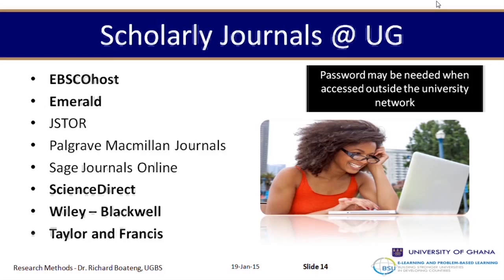Some of the journal databases that exist include EBSCOhost, which houses American, European, and some Asian journals; JSTOR, which has many different types of journals; Palgrave, Sage, and Wiley, which are publishers with their own journal collections; Science Direct, which publishes a number of journals and has many from Elsevier; and Taylor and Francis, which also has its own set of journals.